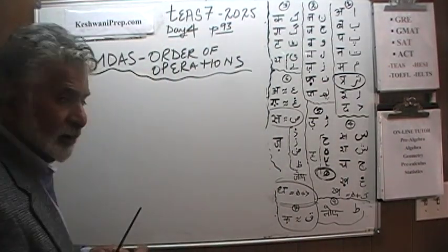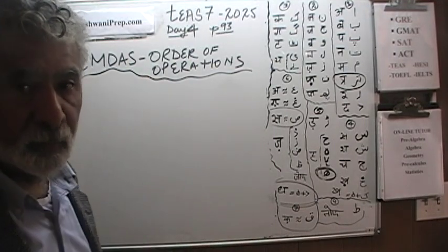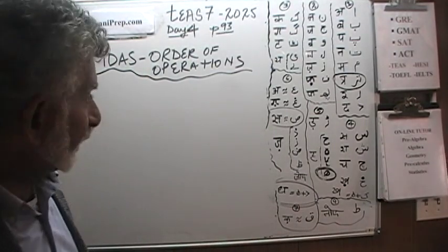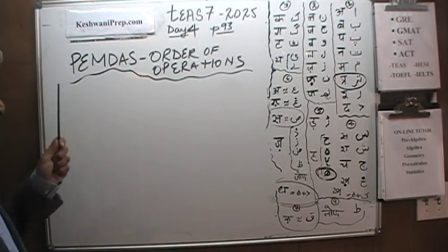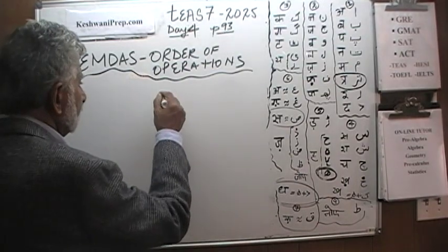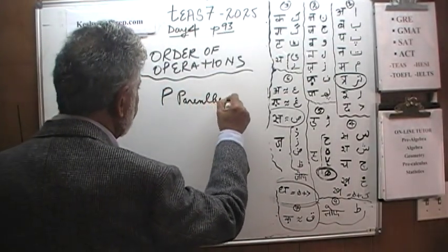There is a mnemonic device for it, a memory device to help us remember in what order we are supposed to perform these functions, these operations. And that is what this is. We have a mnemonic device which is this thing. P stands for parenthesis.